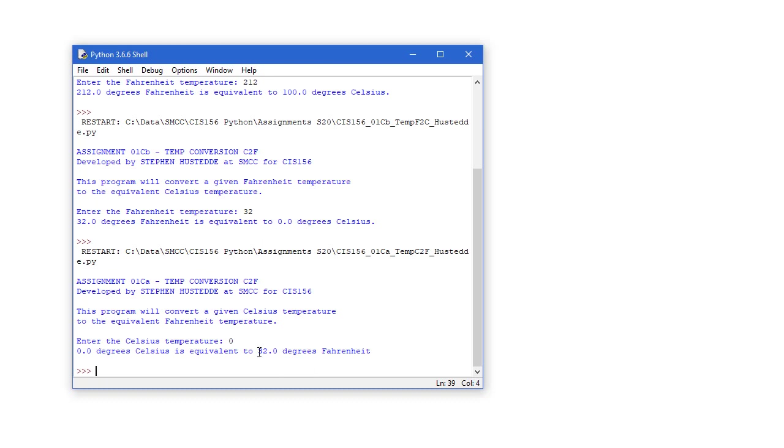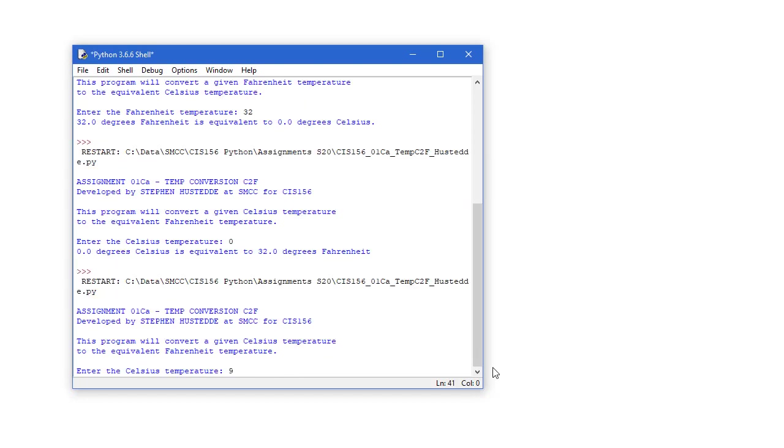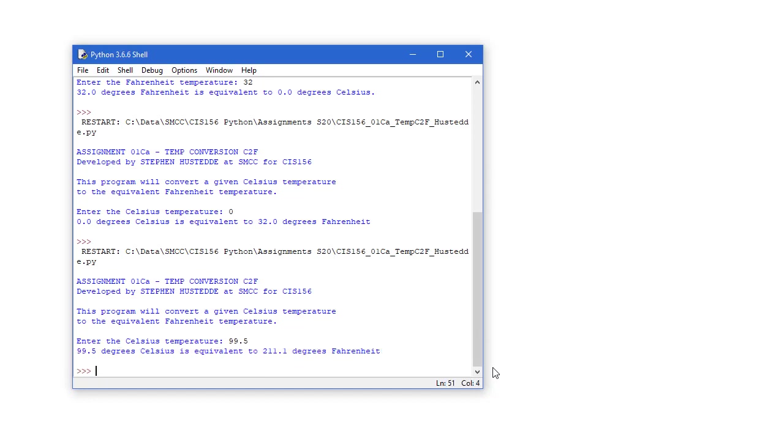I'm going to run the other program. So here I'm converting from Celsius to Fahrenheit. And if I put in 0 degrees Celsius, I should get 32.0 degrees Fahrenheit. Remember, we're going to calculate these to one decimal place. I'm going to run again. I can enter a decimal floating point number. And so 99.5 is 211.1. It's not 212. So again, use these values in testing your program.